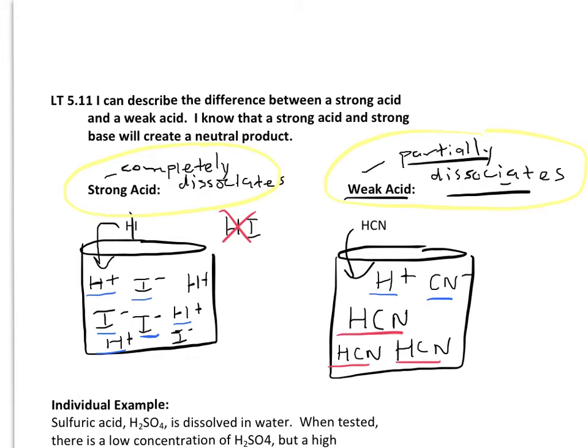The second part of this learning target says I know that a strong acid and base will create a neutral product. And this is an example of sodium hydroxide combining with hydrochloric acid. These are both really dangerous. NaOH or sodium hydroxide is very basic and HCl is a strong acid.